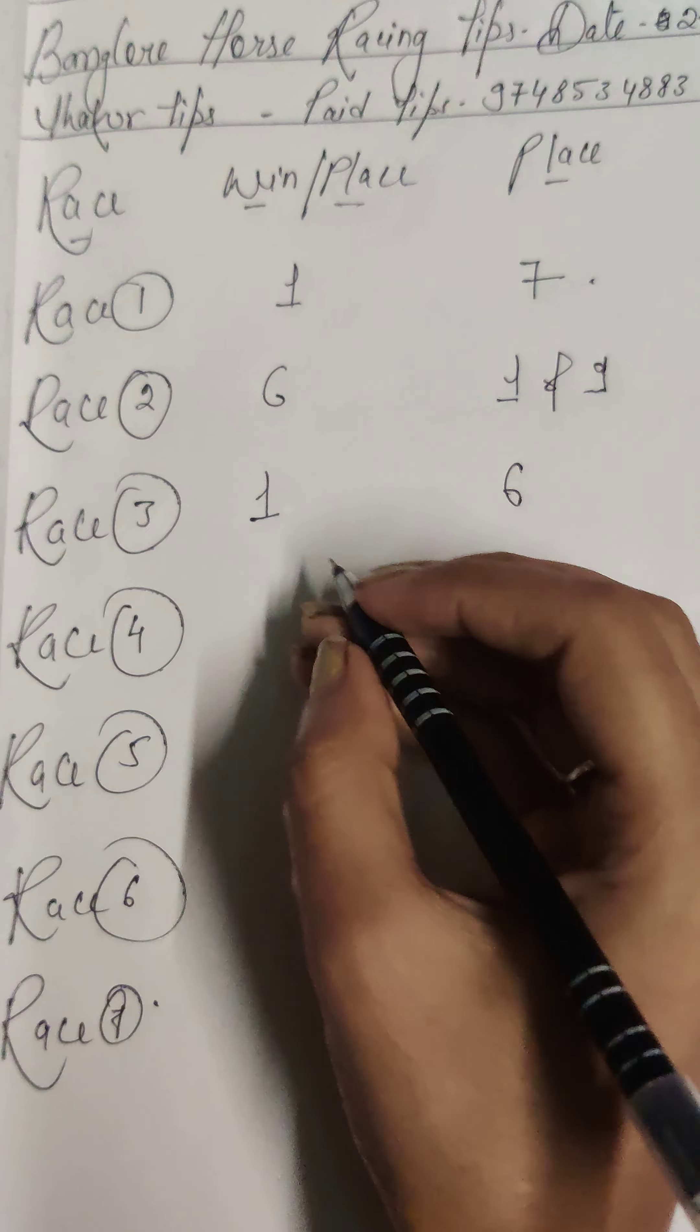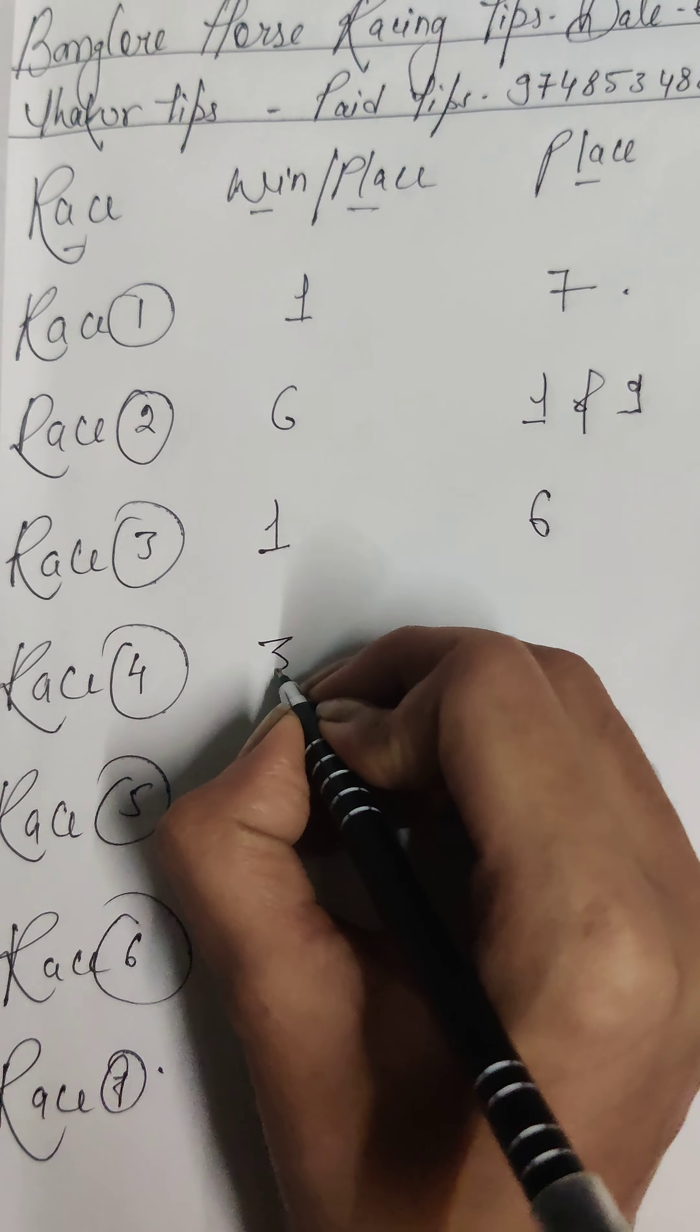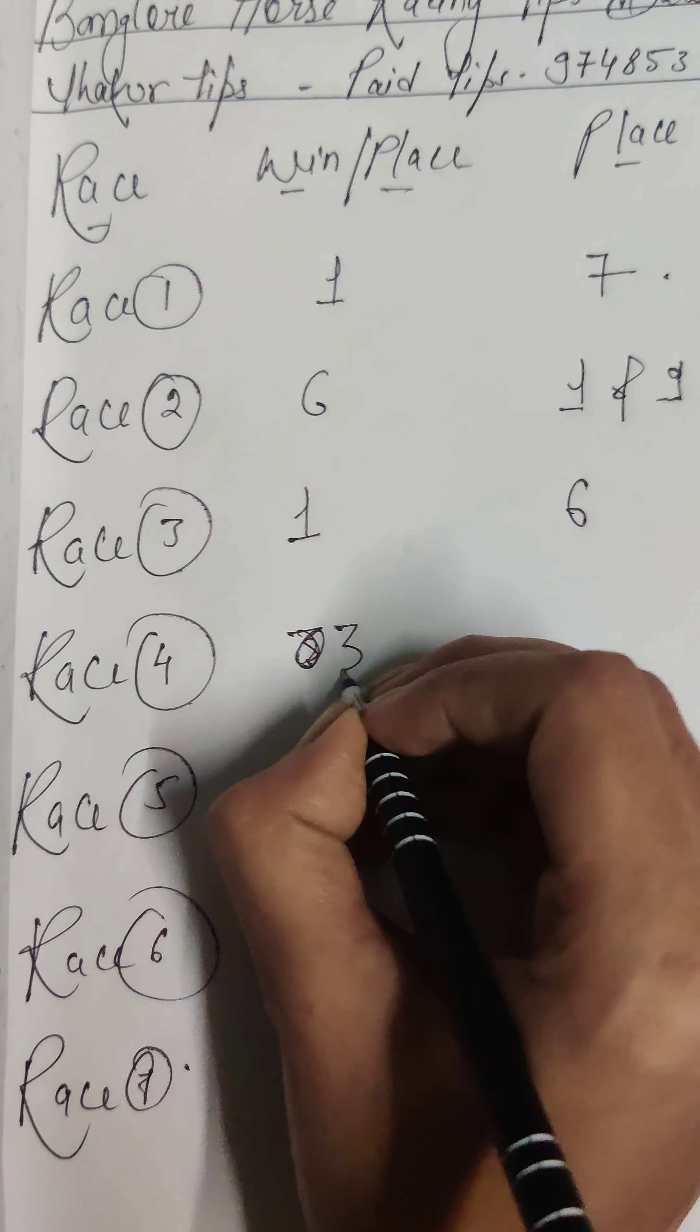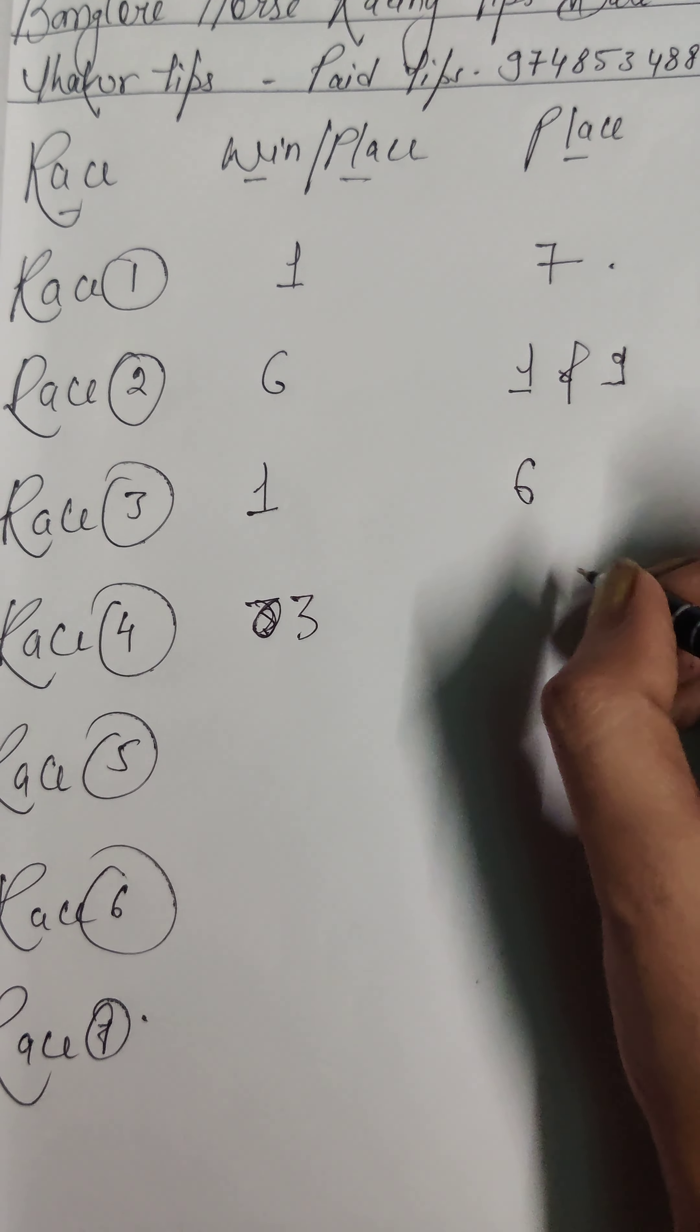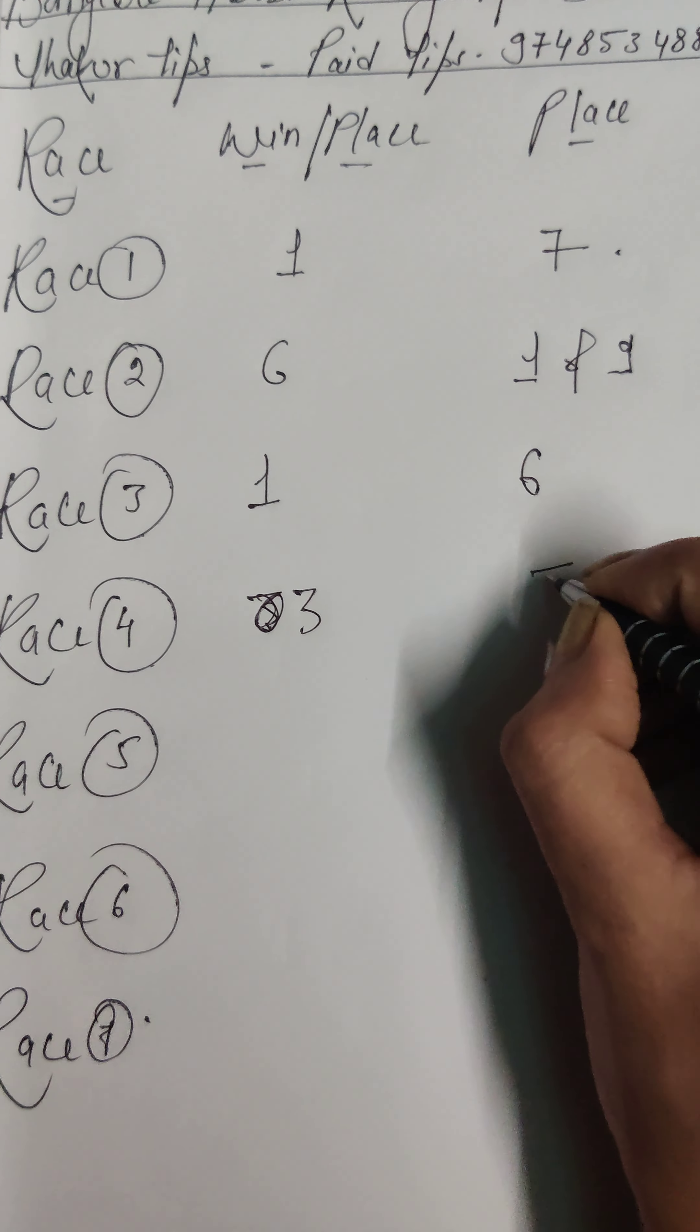Race number 4, my first choice is horse number 3, 3 ouch, 3 ouch. And my second choice is horse number 5.